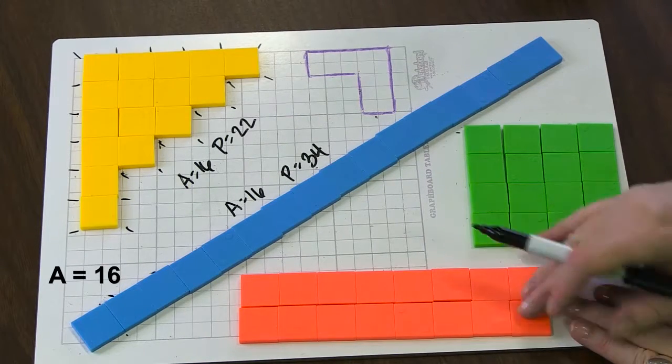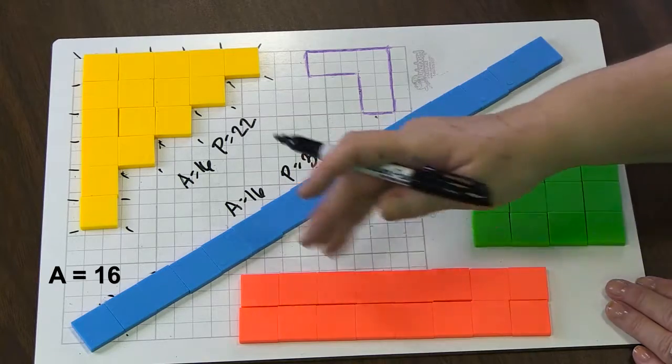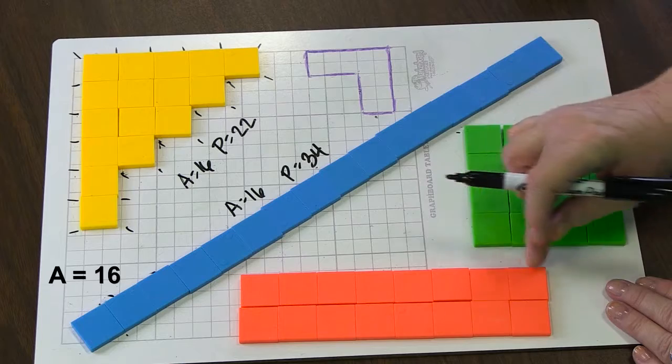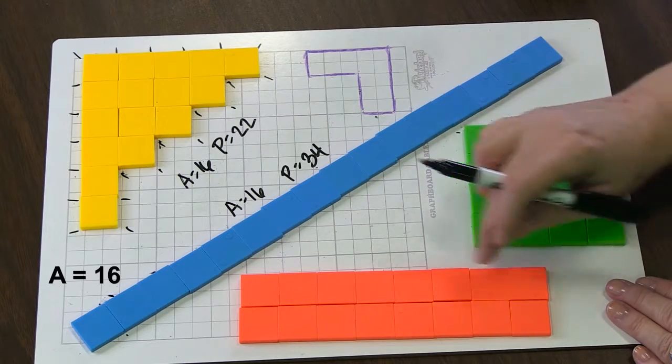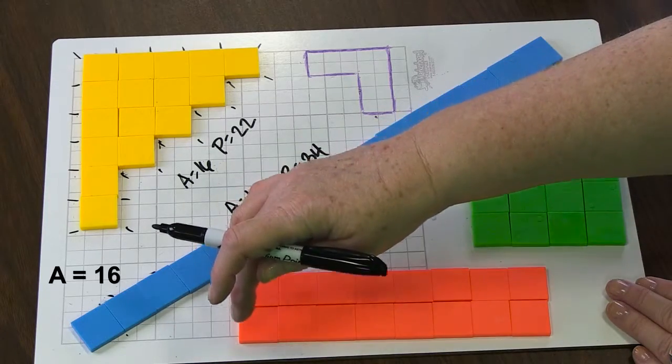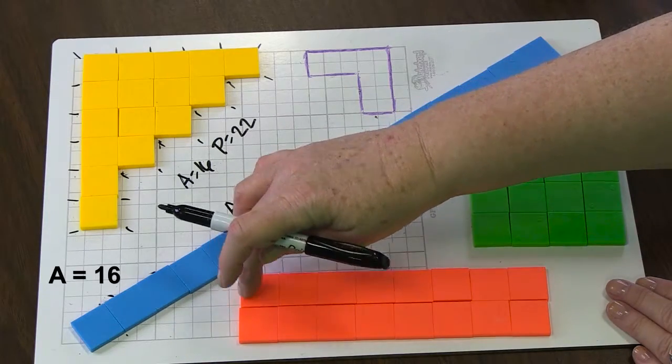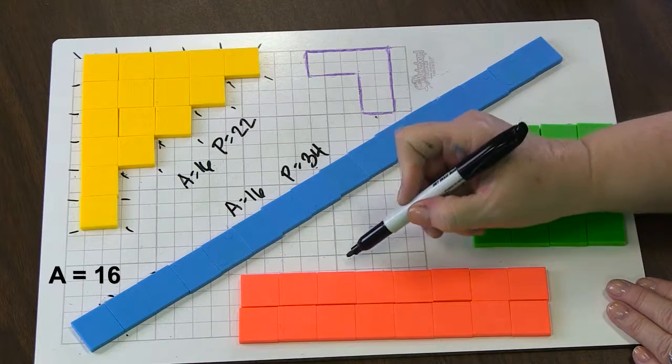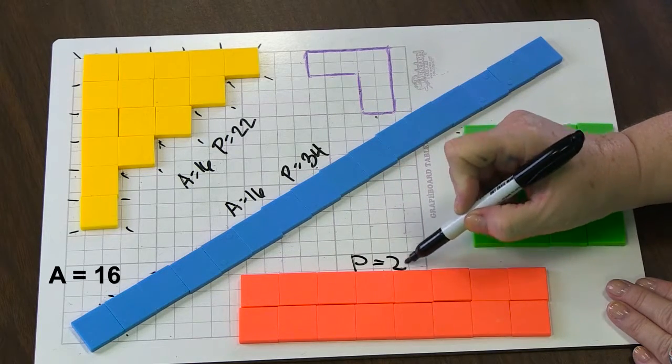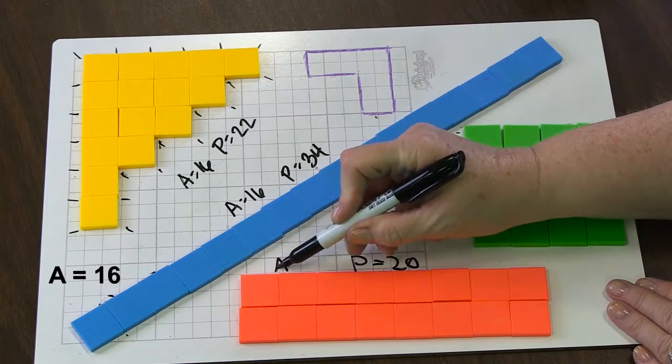Over here to the orange, we have two rows of eight. And so we have eight units on this side for a perimeter, eight on this side, and eight and eight is 16, plus the ends gives us 17, 18, 19, 20. So we have a perimeter of 20 on this shape, again our area is still 16.